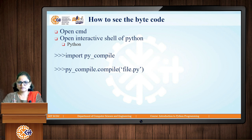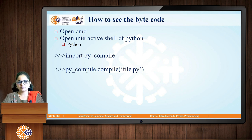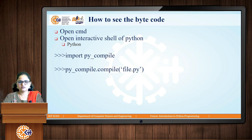To view the bytecode of your program, open the command prompt and launch the Python interactive shell by typing 'python'. Then import the py_compile library and call py_compile.compile() providing your filename. A .pyc file will be created, and you can examine the bytecode in it. This will also be demonstrated in the next session.